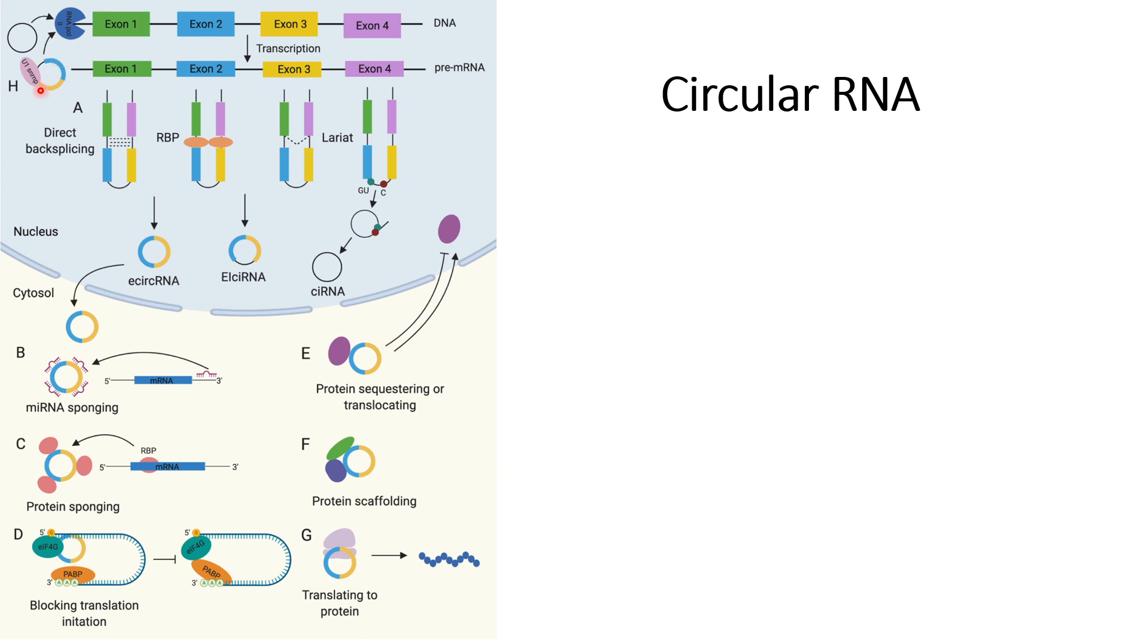Another thing circular RNA can do is enhance the transcription of genes. One example shown here is that circular RNA interacts with U1 snRNP protein, and this complex can interact with RNA polymerase 2 and promote the transcription of particular genes. This is one example by which circular RNA can enhance the transcription of certain genes available within cells.